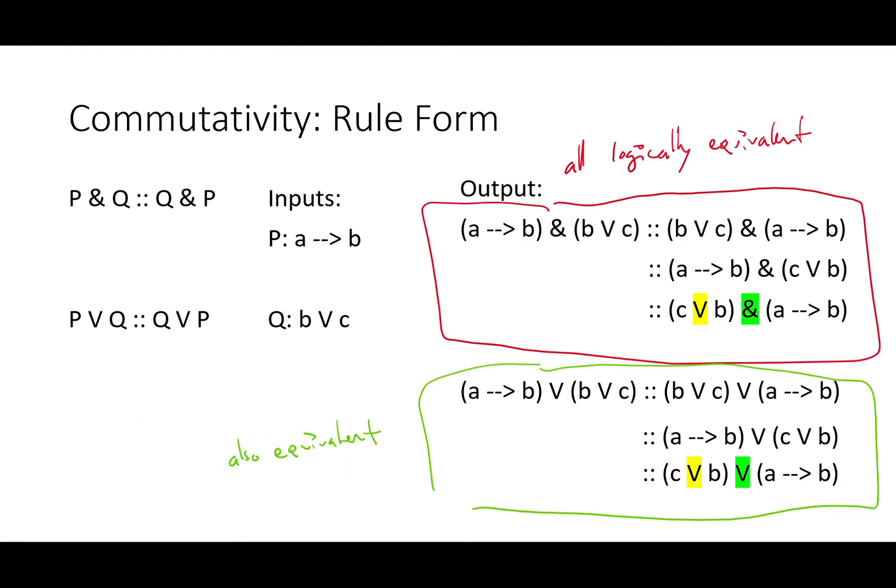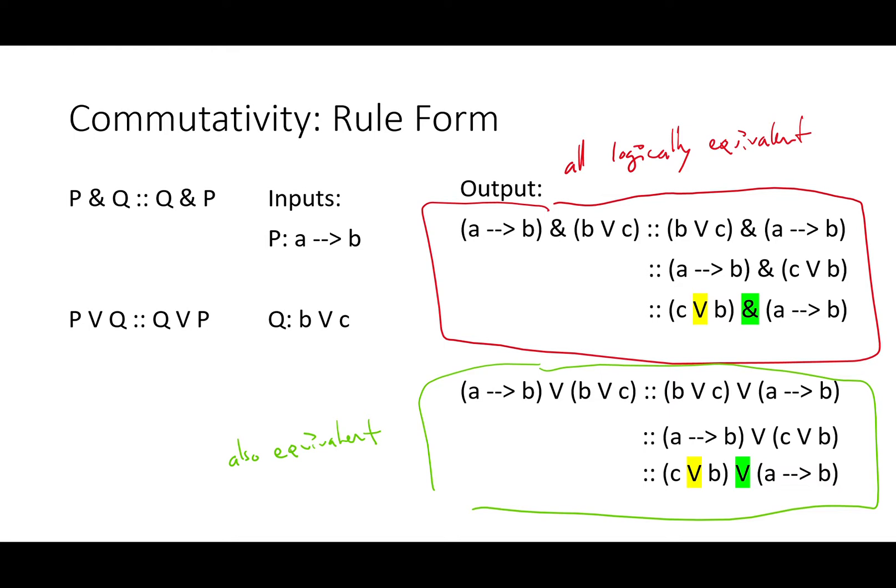That gives us four sets of logically equivalent statements for each version of commutativity. In all of them, all we've done is change the order. The order doesn't matter. Note, however, that we cannot apply commutativity to the conditional. The order does matter in if A then B.